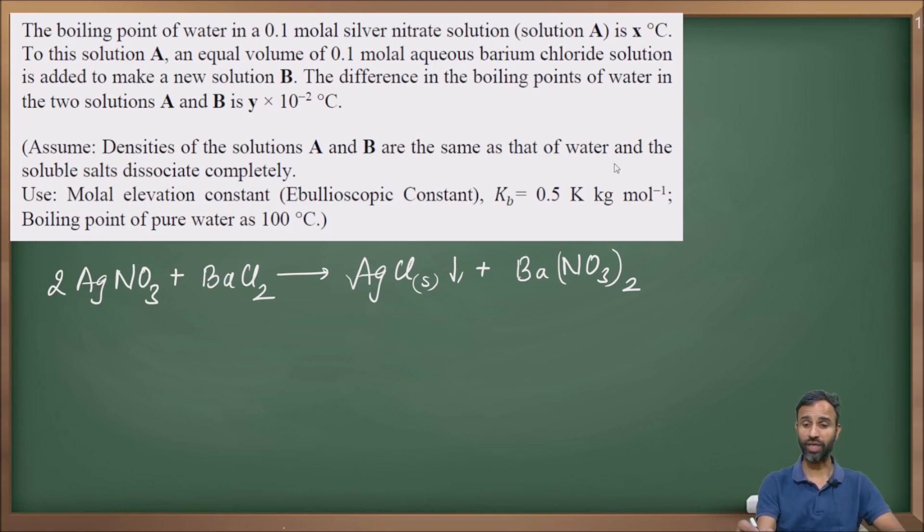Statement is the soluble salts dissociate completely. That means silver chloride will not dissociate, it remains in the PPT form. We have now silver nitrate which reacts with barium chloride to give barium nitrate. But as they are 0.1 molal and equal volume of both are added, both of them become 0.05 molal. This one is 0.05 molal, it is also 0.05 molal.